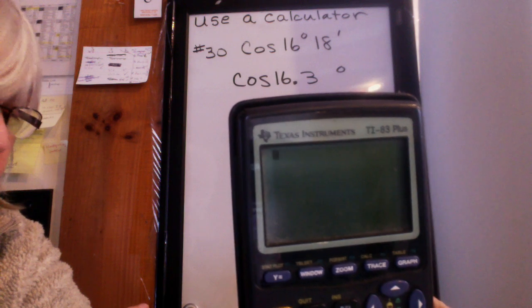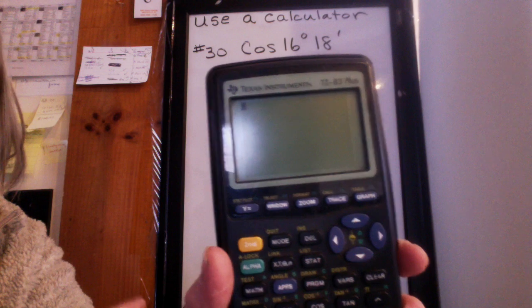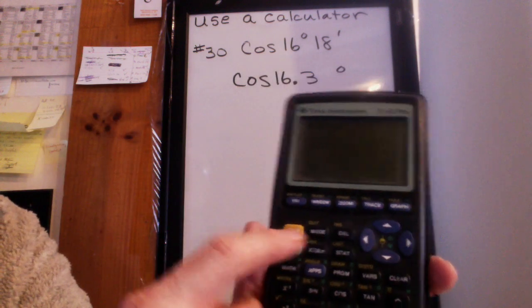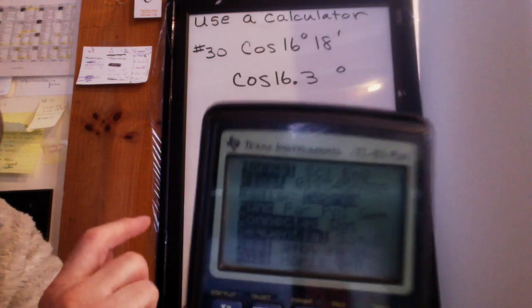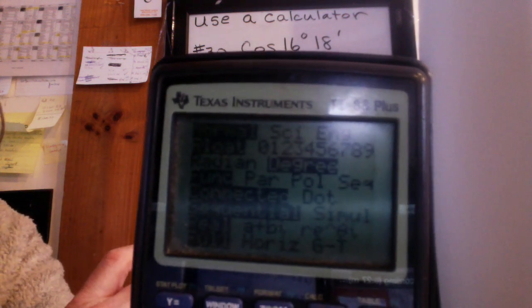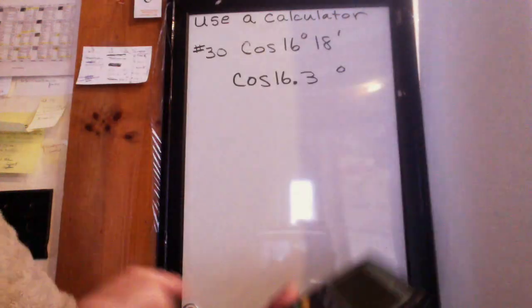The first thing I want you to do though is check the mode button, which is right next to this yellow key, and make sure your calculator is in degree mode. As you can see, degree is highlighted there, so there's two choices: radian or degree.